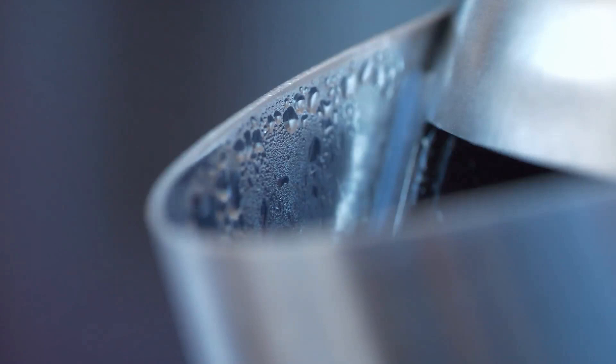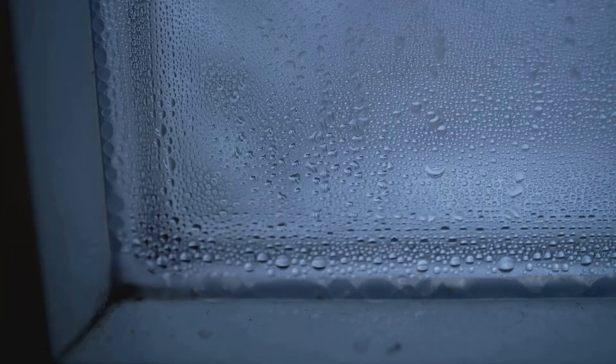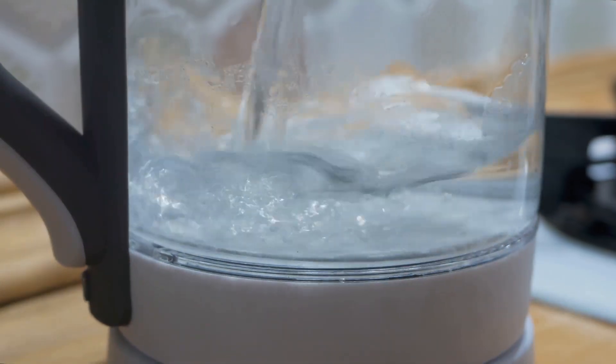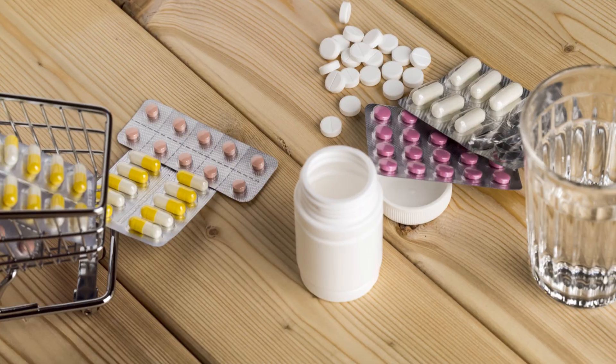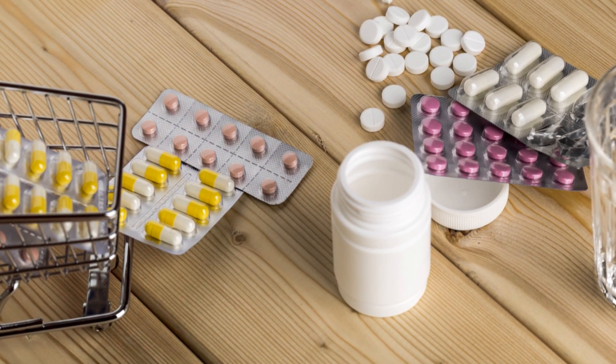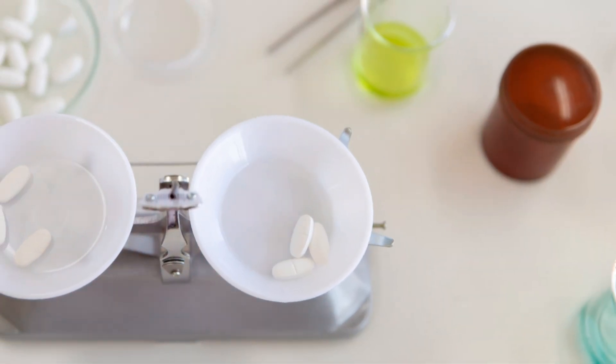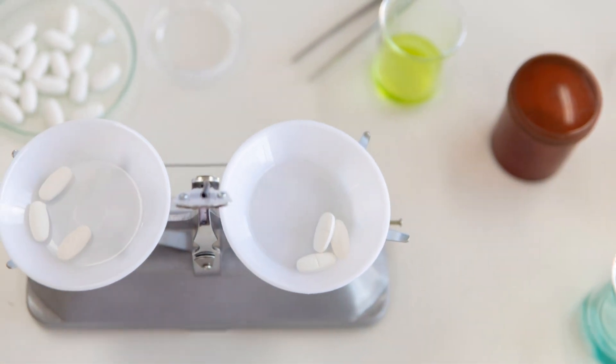Next, we need to cool down the steam. As the steam cools, it condenses. Condensation means it turns back into liquid water. This pure water is collected in a separate container. That's it. We've successfully removed impurities and created pure distilled water. This process has been used for centuries, and it's still an effective way to purify water today.